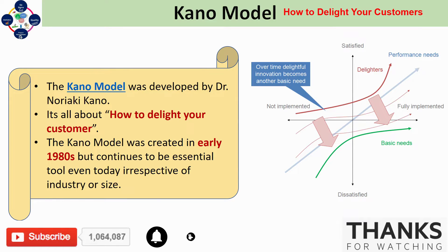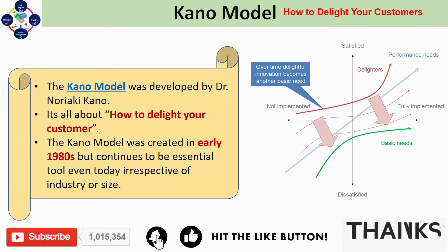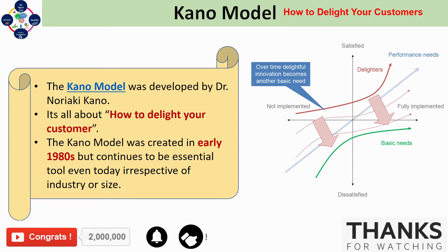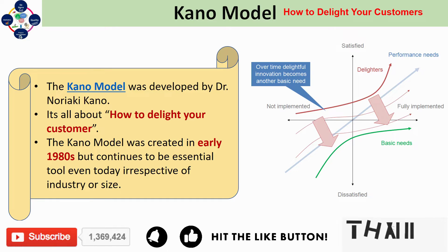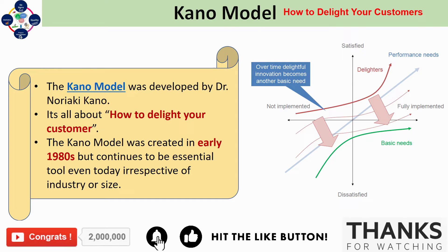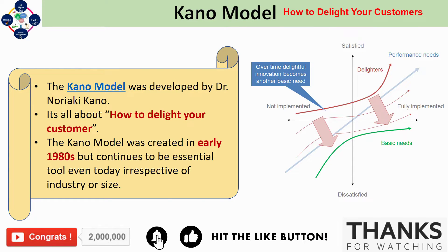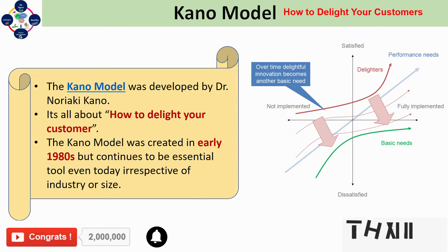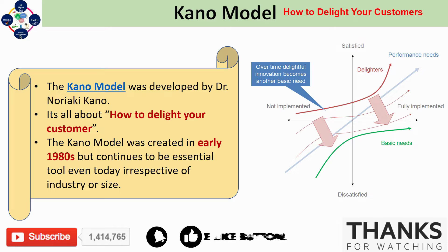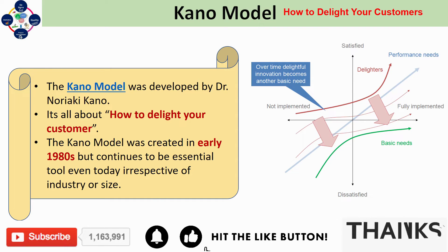The Kano Model is useful for gaining a thorough understanding of customer needs. It recognizes that a product or service is much more than just functionality — it is also about the customer's emotions. For example, all customers who buy a new car expect it to stop when they hit the brakes, but many will be delighted by a voice-activated parking system. Over time, when customers get used to excitement features, those features become expectations and move to become basic features — a must-have whose absence now causes dissatisfaction.